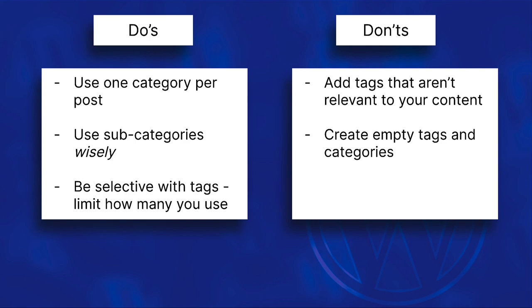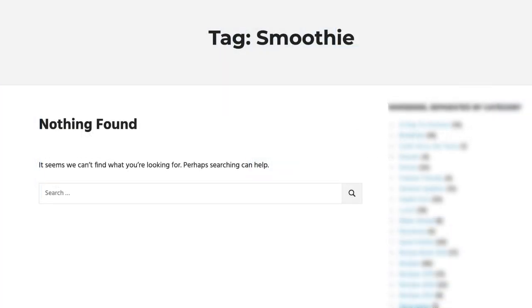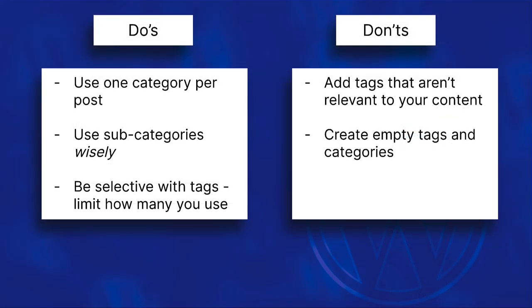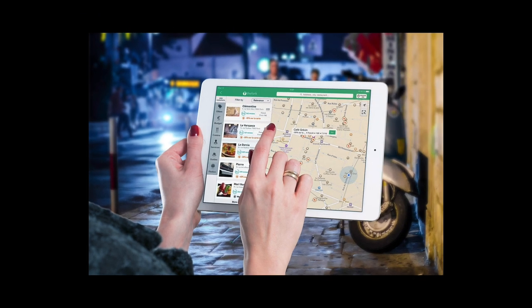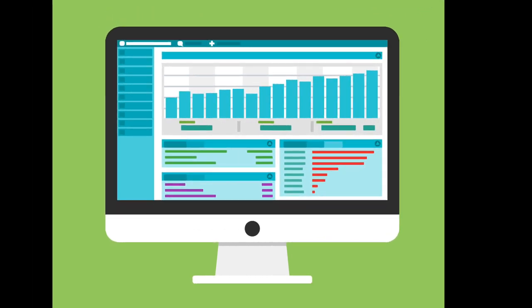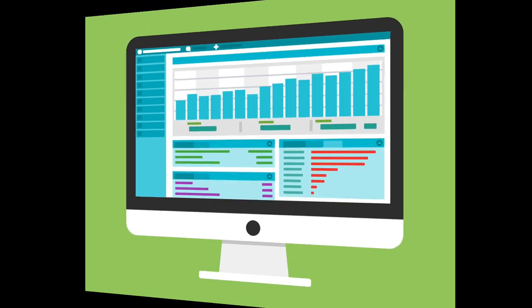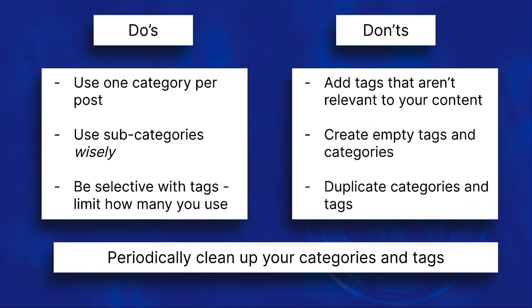Also, avoid creating empty or irrelevant categories and tags. Ensure that all your categories and tags serve a purpose, and avoid creating them without any actual content, as empty or irrelevant ones can negatively impact your site's SEO and confuse users. Don't create duplicate categories or tags — ensure each is unique and doesn't have a synonymous counterpart on your site, which prevents redundancy and makes it easier for users to navigate. By avoiding these common pitfalls, you can better optimize your WordPress website's categories and tags for SEO and enhance the overall user experience. Periodically review them for any redundant or outdated terms, and consolidate or delete them to keep your site taxonomy clean, efficient, and user-friendly.